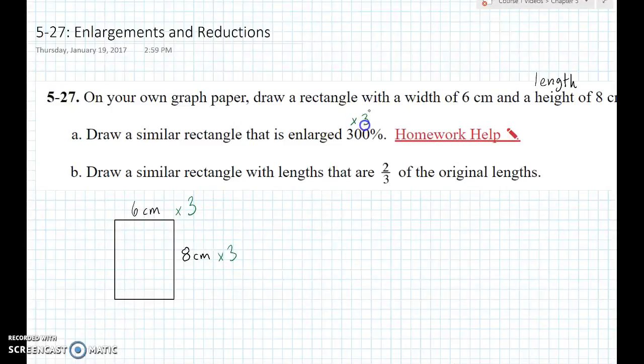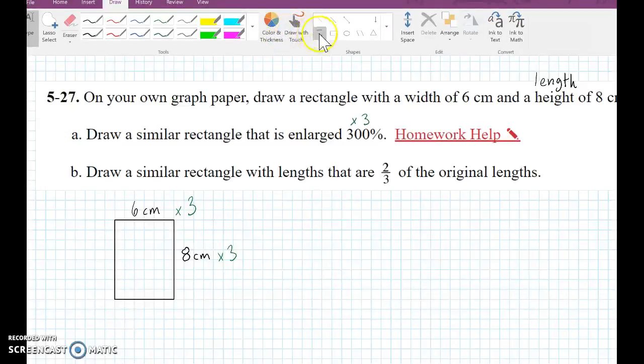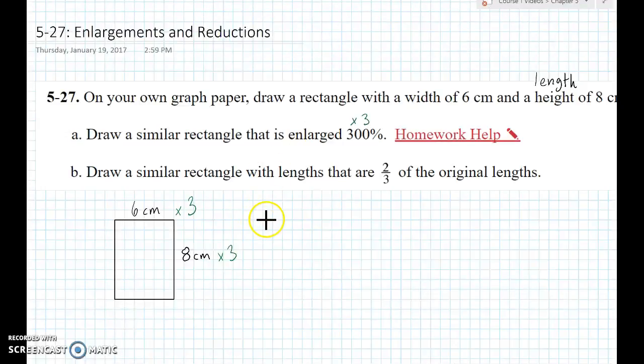So enlarge by 3. And let's get that rectangle tool back out. And our new - what's happening here? Let's see. Here we go. Alright. Instead of a 6 by 8, we now have an 18 [counting from 1 to 18]. By 24.